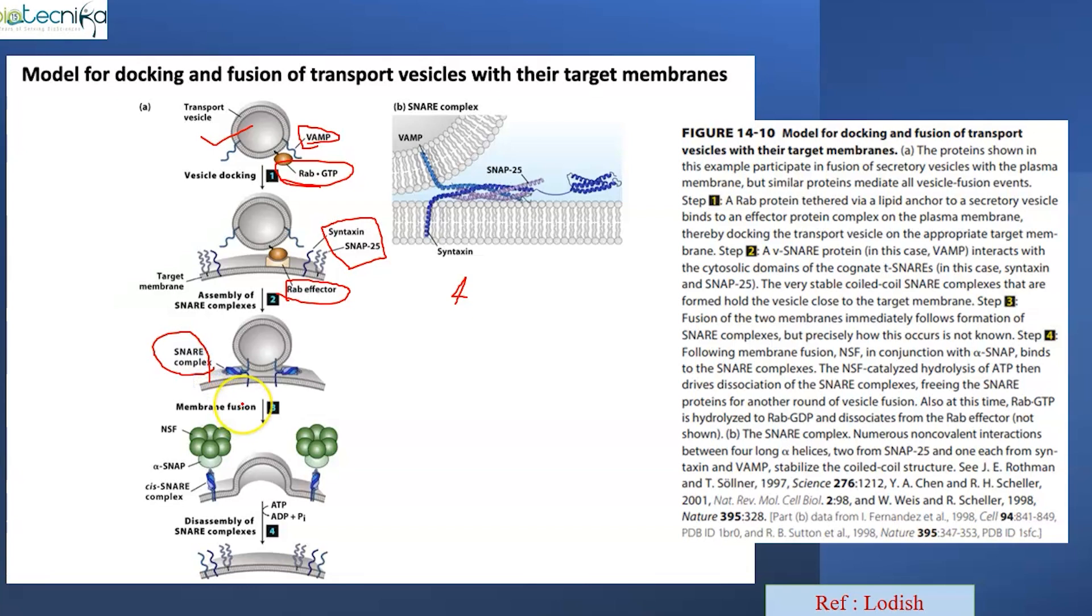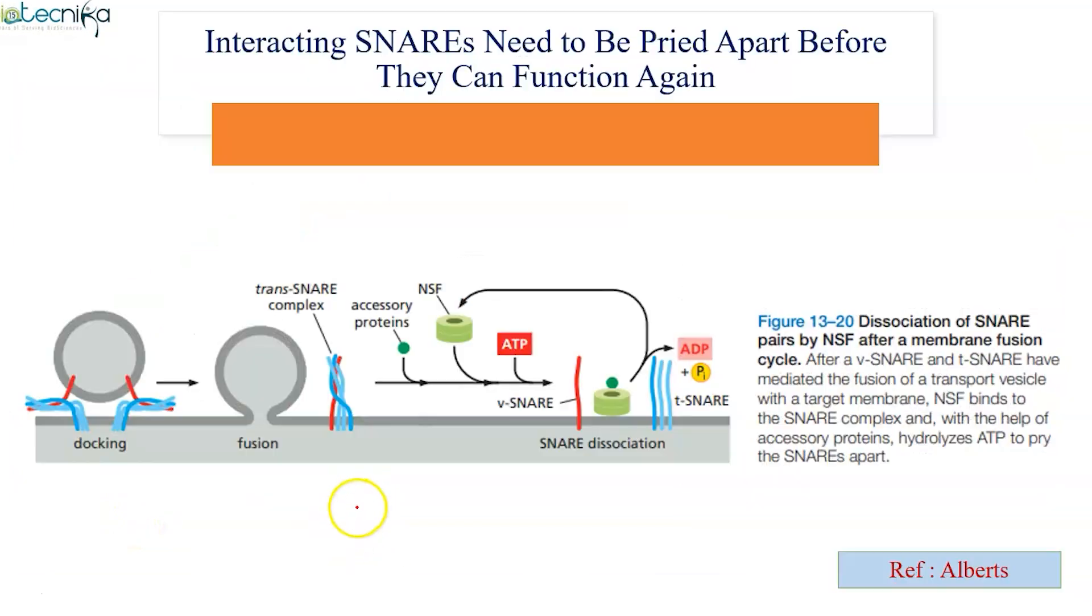Now you might be thinking, what is the fate of these SNARE proteins after membrane fusion? Well, the SNARE protein has to undergo disassembly, then only it will be ready to take up another set of reactions. For that we are having this NSF and alpha-SNAP that will help in disassembling the SNARE proteins. For that I have another image.